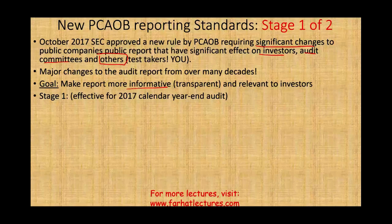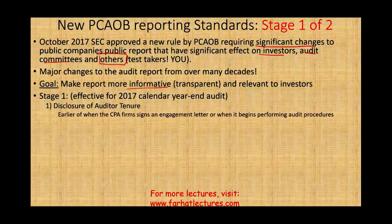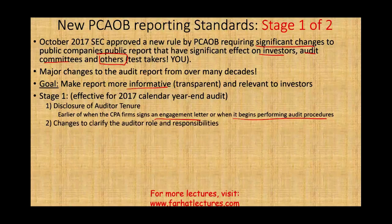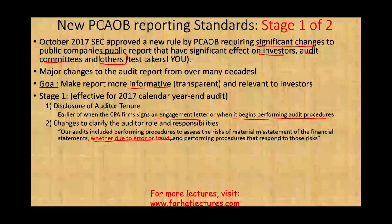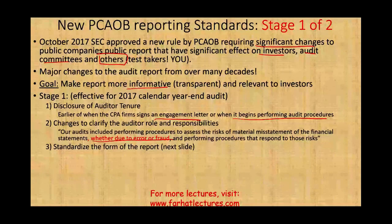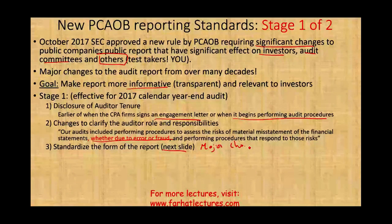The new rule made additional requirements to the report. First is disclosure of auditor's tenure — going forward, the report will have to disclose the auditor's tenure, specifically the earlier of when the CPA firm signs an engagement letter or when it begins performing audit procedures. Second, they made changes to clarify the auditor's role and responsibility. They added a statement: 'Our audit included performing procedures to assess the risk of material misstatements of financial statements, whether due to error or fraud, and performing procedures that respond to those risks.'